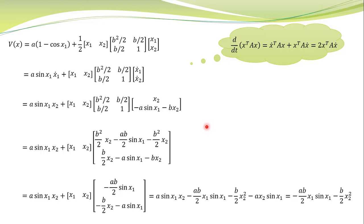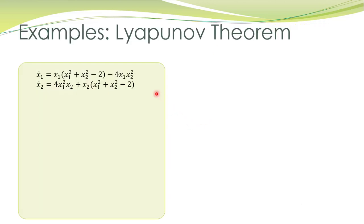We proceed to the next example. We have another nonlinear system and we want to determine the stability of the equilibrium point at the origin. For this system we take a positive definite candidate Lyapunov function — it is obviously positive definite: V of 0 is 0, and V is always positive for any value of X not equal to 0.